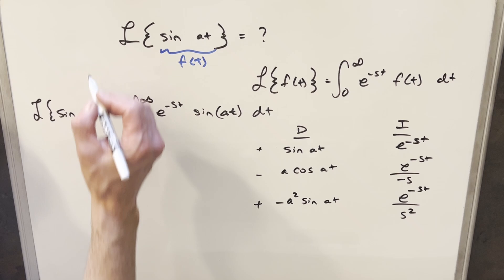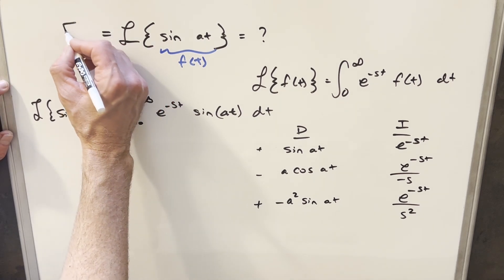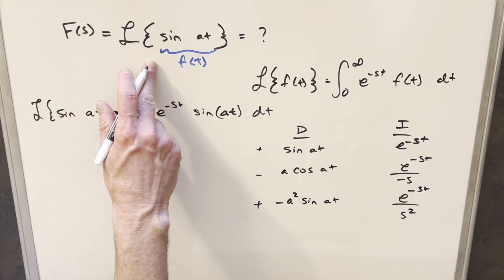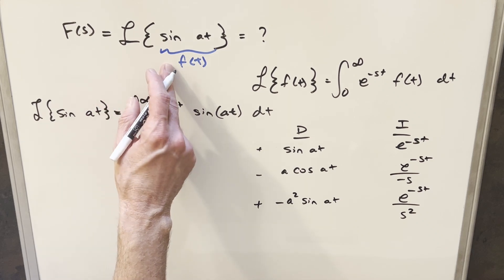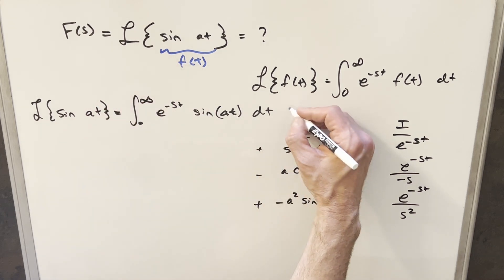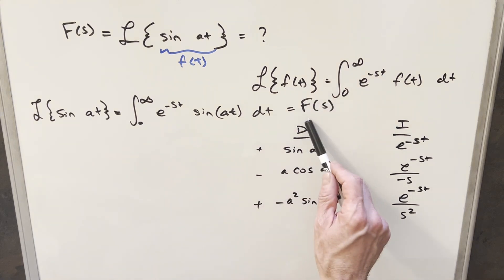One thing I want to do before we continue, I'm going to use this notation, capital F of s, to notate the solution for our Laplace transform of the function we're looking for, sine of at. We'll use it here too. So this is going to be, we'll call this capital F of s, and this is our goal or the thing that we want to find.